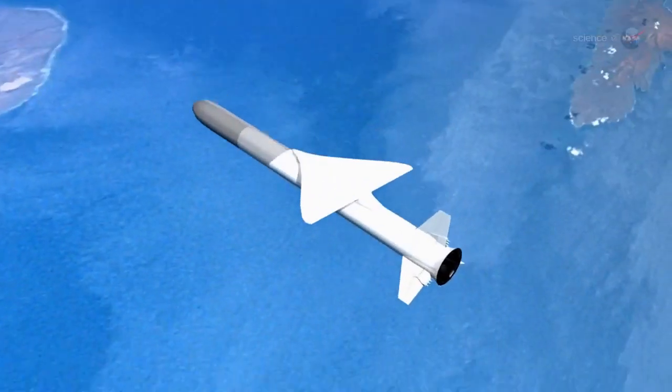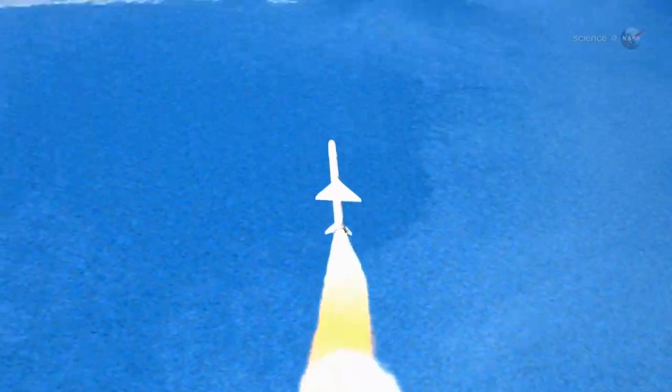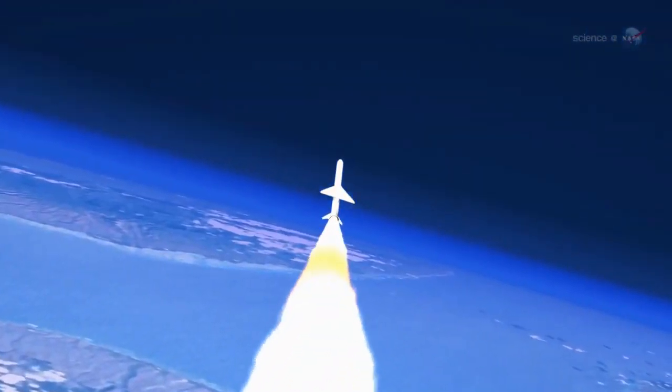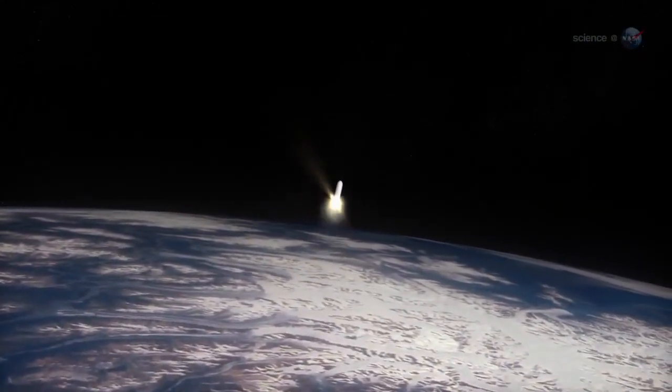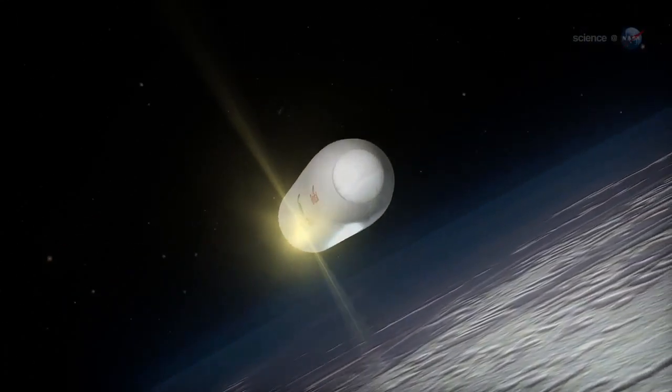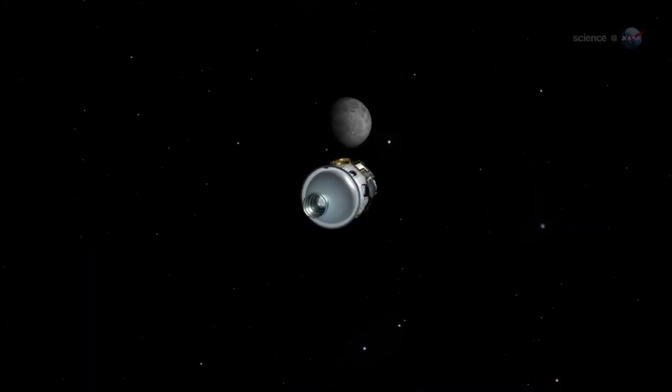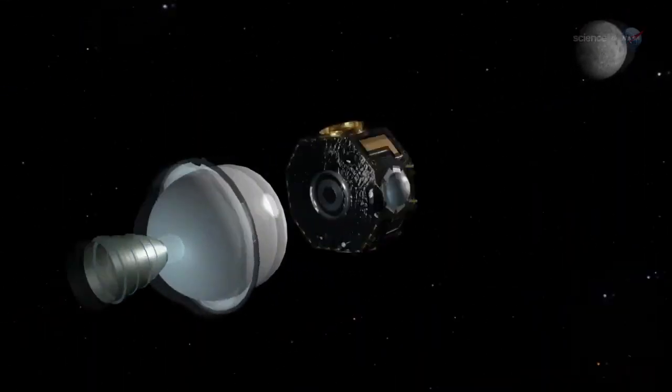Launched in 2008, the IBEX spacecraft spins in Earth's orbit, scanning the entire sky. IBEX's special trick is detecting neutral atoms that slip through the heliosphere's magnetic defenses. Without actually exiting the solar system, IBEX is able to sample the galaxy outside.